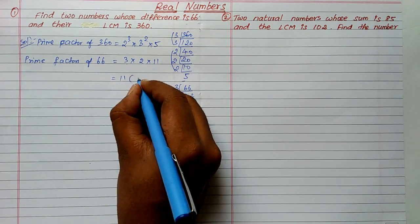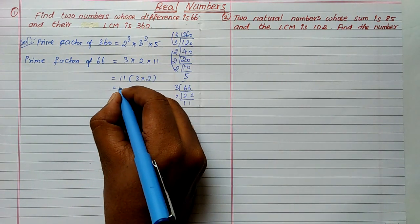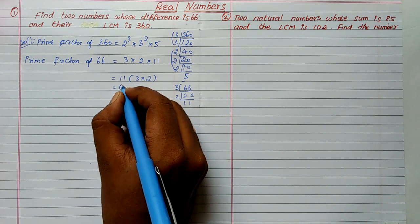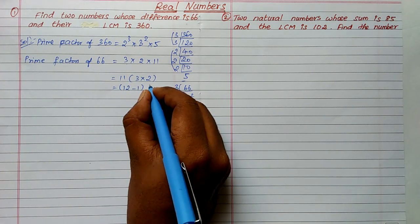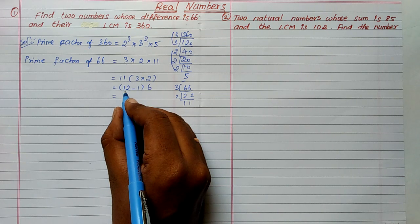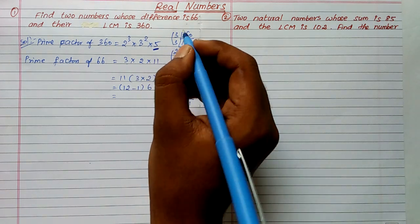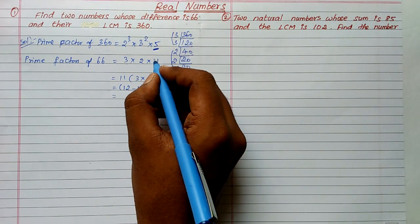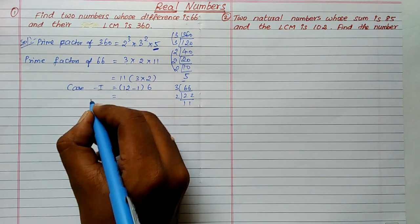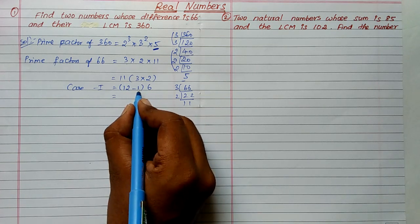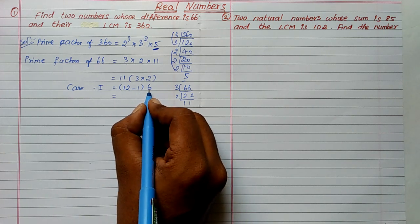Now, the additional factor from 360 is 5. We split 11 as 12 minus 1, so the two parts are 12 and 1, multiplied by 6 each. Case 1: (12 × 6) and (1 × 6) gives 72 and 6. But checking the factor of 72 — we get 2 × 2 × 2 × 3 × 3 — there is no factor of 5 here, so case 1 is not possible.